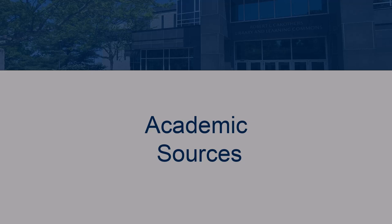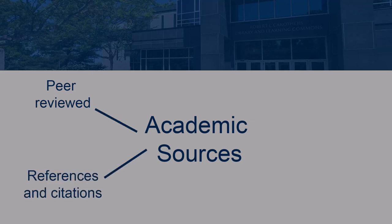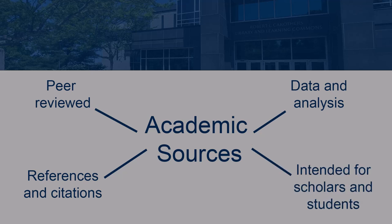These sources are original research produced by scholars that are then thoroughly vetted through a process called peer review, in which other scholars evaluate and comment on the work of the authors. This ensures a high quality end result. Additionally, these sources provide readers with references and citations as to their claims, and are backed up with in-depth data and analysis. The audience of these sources is expected to be other scholars or students, and their primary purpose is to inform. These academic sources can be found through library databases and the catalog.